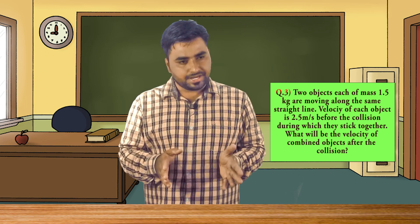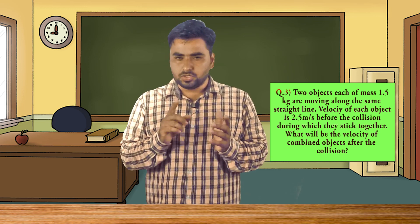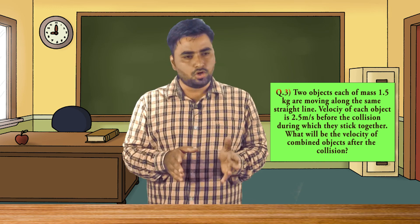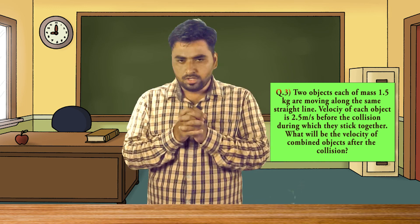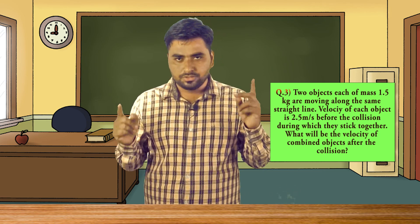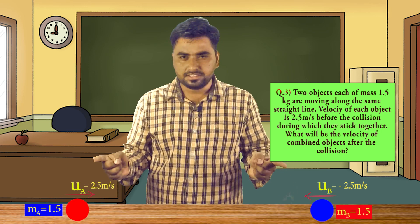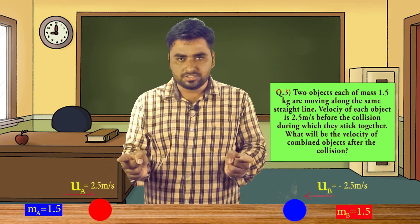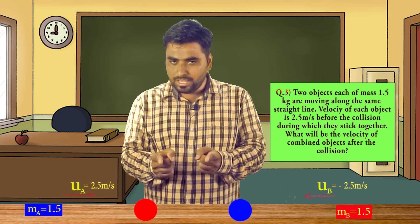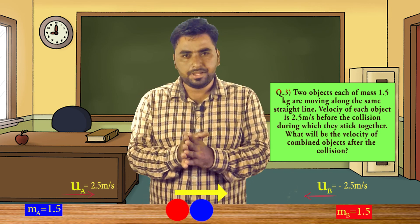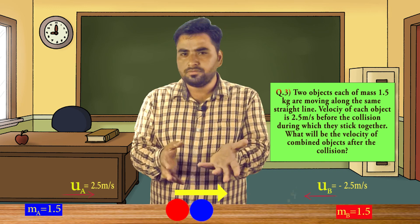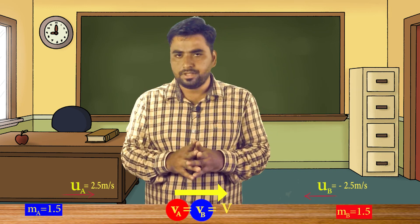The third question is: two objects each of mass 1.5 kg are moving in the same straight line but in opposite directions. The velocity of each object is 2.5 meters per second before the collision, during which they stick together. What will be the velocity of the combined objects after the collision? This is based on conservation of momentum. Both masses are 1.5 kg moving in opposite directions — they collide and stick together.